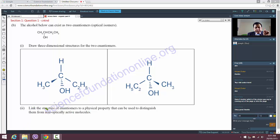Look at this wording here: link the structure - so you have to link the actual structure of enantiomers to a physical property that can be used to distinguish them from non-optically active molecules. Enantiomers or optically active molecules contain carbon atoms connected to four different groups - that's the structure. We want to relate it to a physical property. Optically active molecules rotate the plane of polarization of plane-polarized light (PPL).